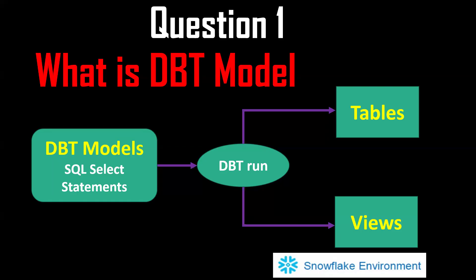dbt models are .sql files that contain select statements. The select statements contain the transformation logic. Whenever we run a model, either tables, views, ephemeral, or incremental objects will be created in the database based on the materialization property. The database can be Snowflake, Redshift, or anything. This is what a dbt model is.